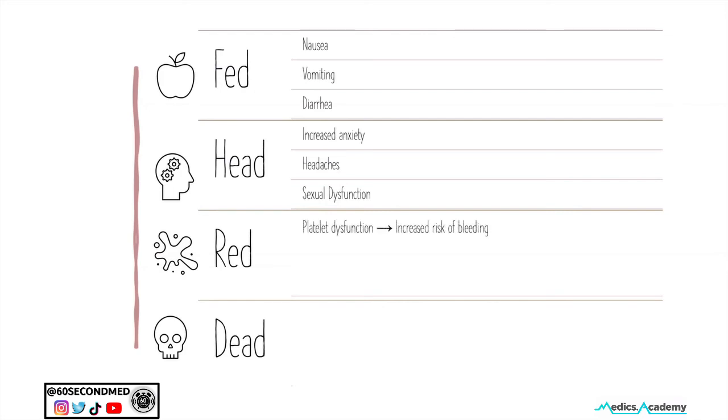Red reminds us of blood and in this case, platelet dysfunction. This leads patients at a high risk of bleeding, particularly GI bleeds, and can be important with patients who are already at risk of this pathology.